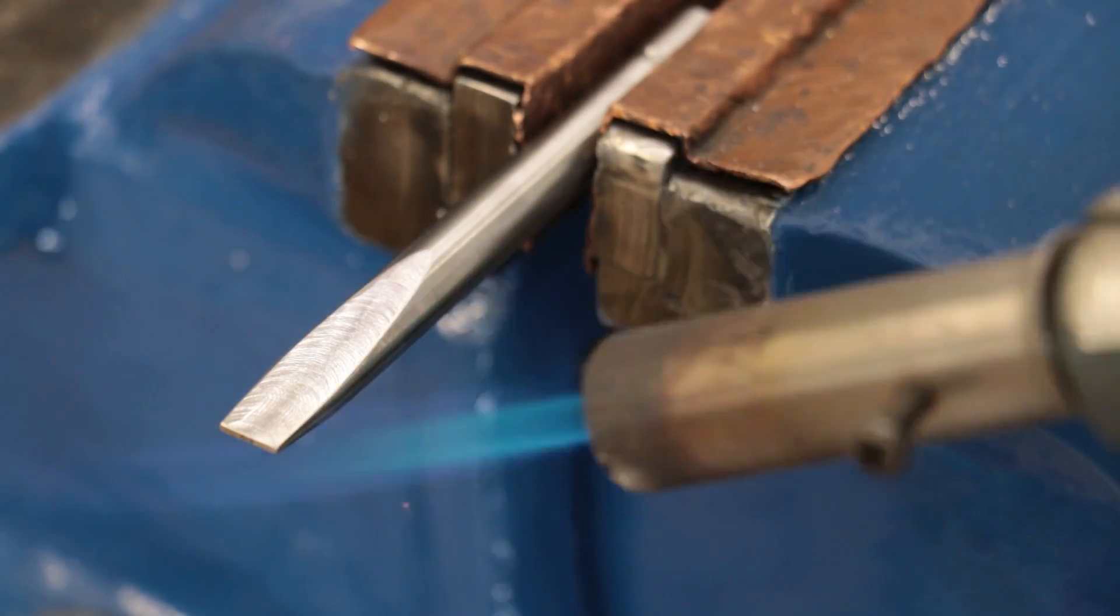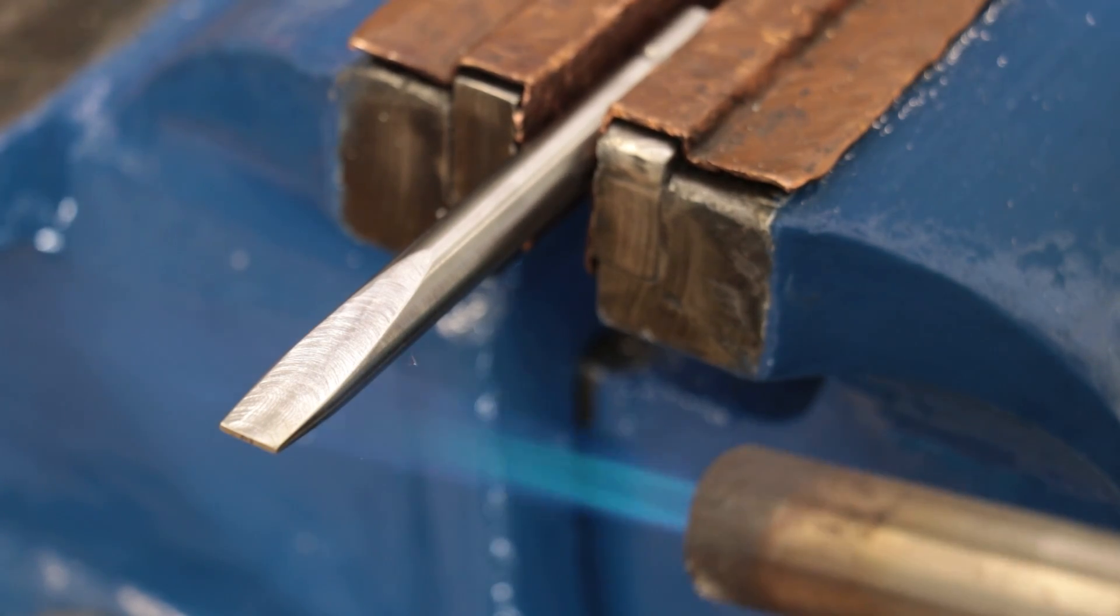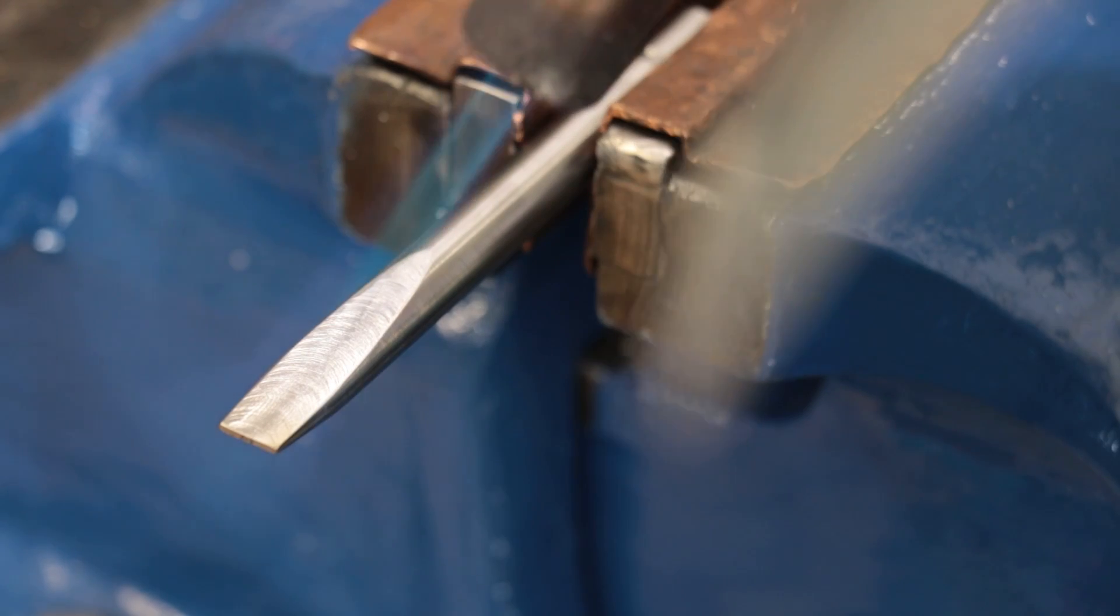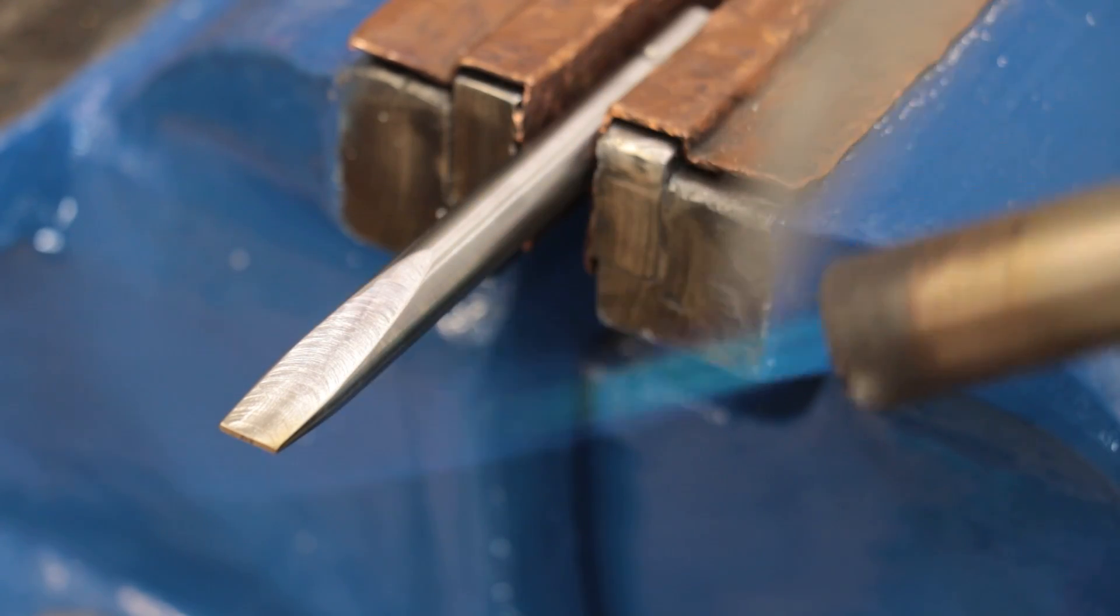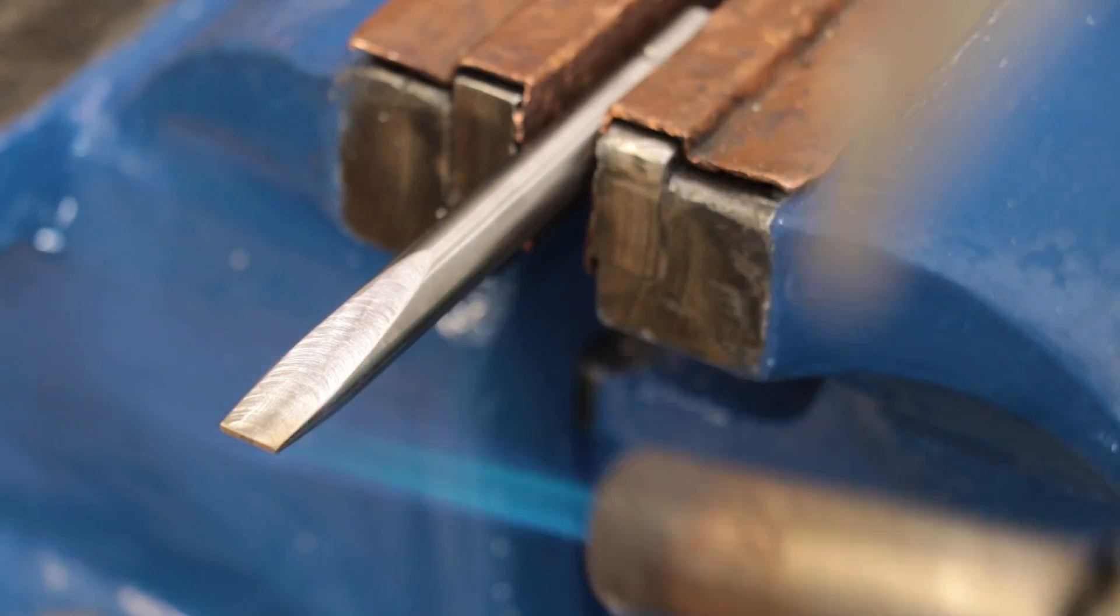I'll then temper it back until I get a dark straw color and for a part like this I think butane does a much better job than propane since it puts out less heat and there's less chance that you'll overshoot the desired temper.